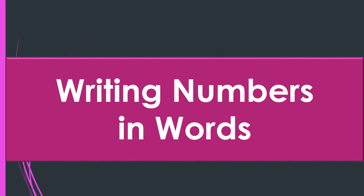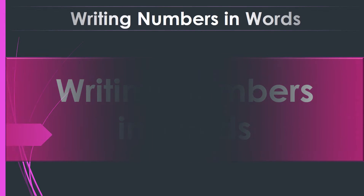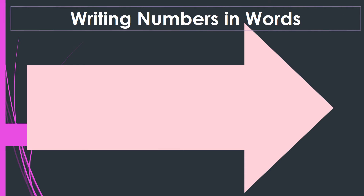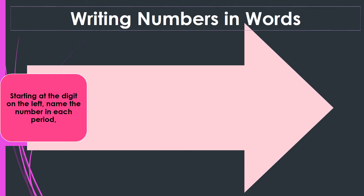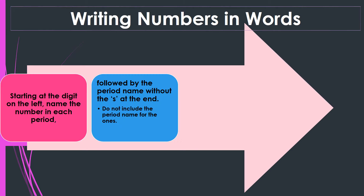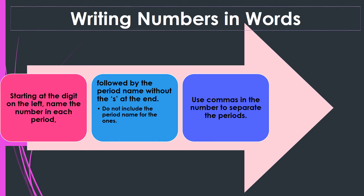Writing numbers in words. Starting at the digit on the left, name the number in each period, followed by the period name without the S at the end. Do not include the period name for the ones. Use commas in the number to separate the periods.